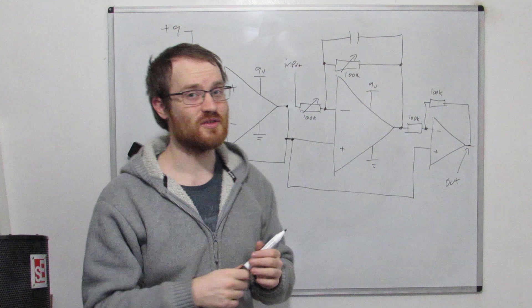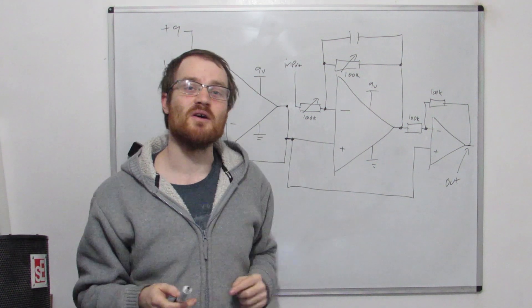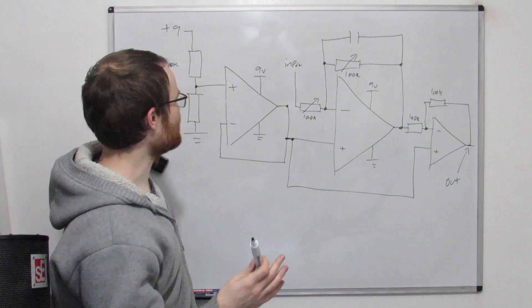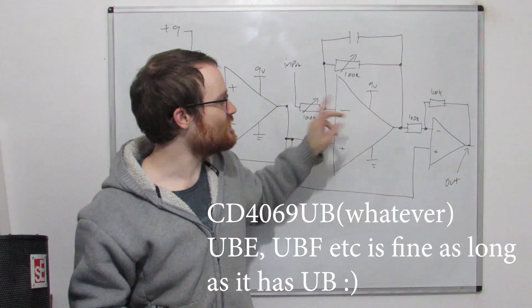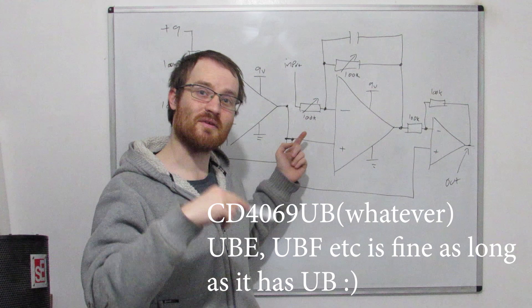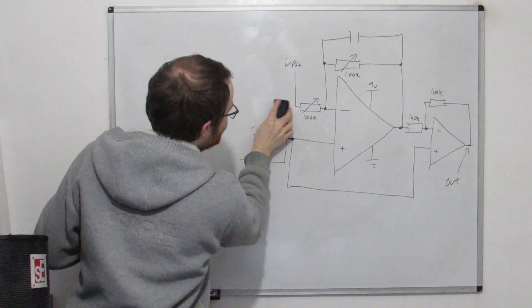We could also just do what we've been doing all along, which is to take advantage of our CMOS chip's ability to do all this stuff for us. The CD4069UB is an inverting amplifier with the midway point threshold set internally to the chip. Get rid of this stuff, get rid of this stuff.